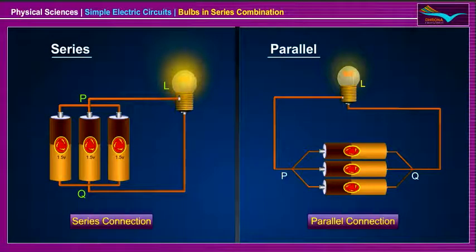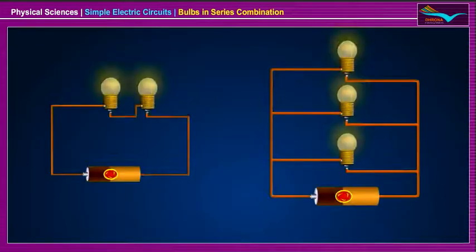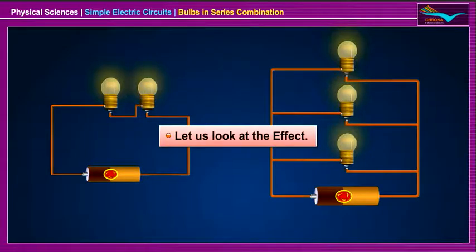Bulbs in Series and Parallel. We have learnt how power sources connected in series or in parallel affect the brightness of a single bulb used in the circuit. Now we will see the effect if more bulbs are connected in the circuit keeping only a single power source. Let us look at the effect.